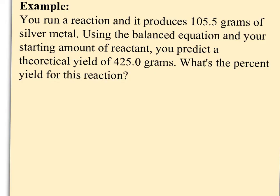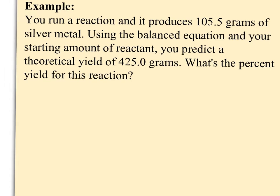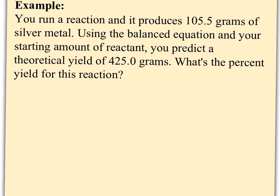So taking a look at my example here, I've told you that you run a reaction and it produces 105.5 grams of silver metal. So this is my actual yield. This is going to go on top when I calculate my percent yield. Using the balanced equation and your starting amount of reactant, you predict a theoretical yield of 425 grams. So somebody's already figured out the limiting reactant, predicted how much we'll get, what's the percent yield. So this is the theoretical here.